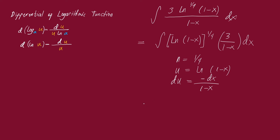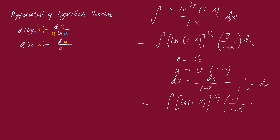Now we will apply the left side of the power formula for integration: the integral of u raised to n du. We have u = ln(1 minus x), raised to n = one-fourth, and du = negative one over (1 minus x) dx. Notice that this is not exactly the same as the original function, because the original function has a 3, while here we have negative one.